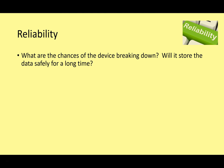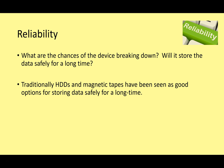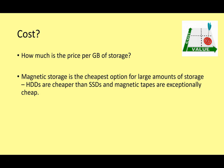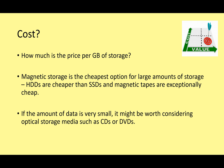For reliability — the chances of the device breaking down and storing data safely for many years — you're probably looking at hard disk drives and magnetic tapes, which are traditionally seen as a good option for storing data safely over a long time. For cost — price per gigabyte — magnetic storage is always the cheapest option for large amounts of data. Hard drives are cheaper than SSDs, and magnetic tapes are exceptionally cheap for long-term archiving. For very small amounts of data, CDs or DVDs can be cheap, though with very limited storage capacity.